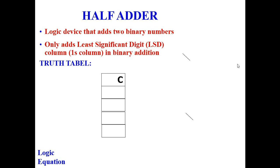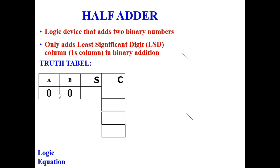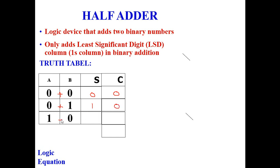For the half adder truth table: when both inputs are 0 (0+0), sum is 0 and carry is 0. For 0+1, sum is 1 and carry is 0. For 1+0, sum is 1 and carry is 0. For 1+1, sum is 0 and carry is 1 — the carry is generated when both inputs are 1.